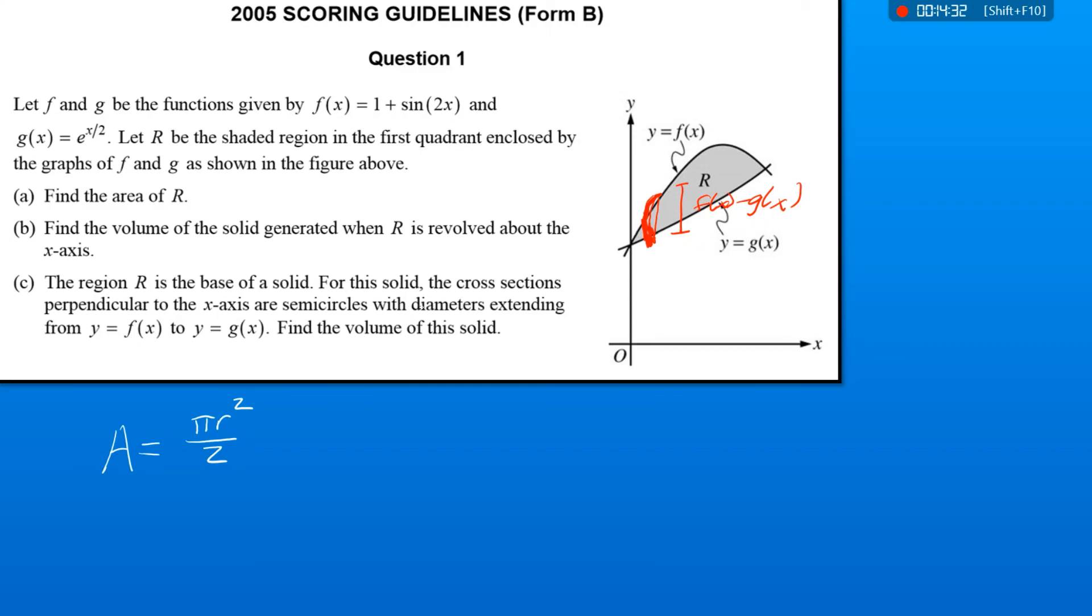Now I was told my diameter is from f of x to g of x. So if my diameter is f minus g, then what is my radius? Top minus bottom is my diameter. D divided by 2. Right.